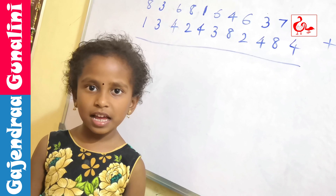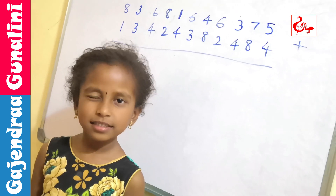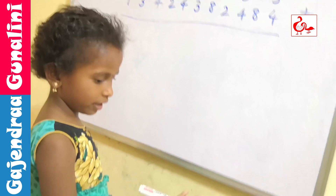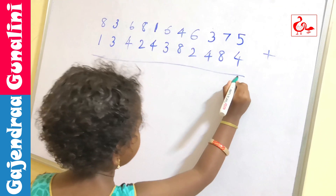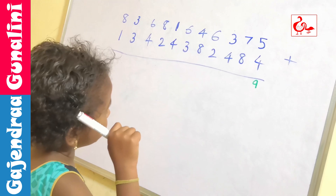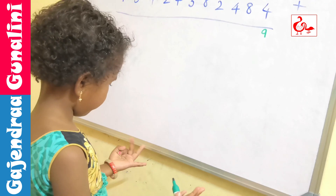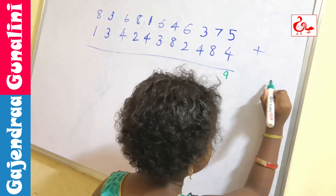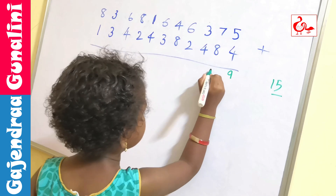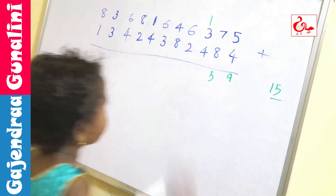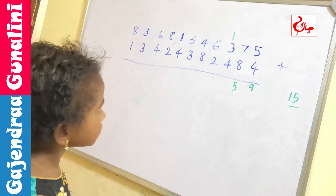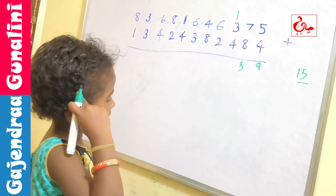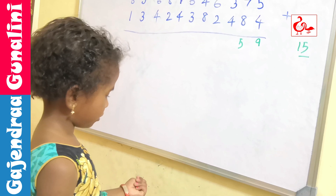My father gave a challenge to add this. Shall we add this? 5 plus 4: 5 in the mind, 4 in the finger. 5 after: 6, 7, 8, 9. We should write 9. 8 in the mind, 7 in the finger. 8 after: 9, 10, 11, 12, 13, 14, 15. So this number is right here. This 3 number also we should add. 3 in the mind, 1 in the finger. 3 after: 4. 4 in the mind, 4 in the finger. 4 after: 5, 6, 7, 8. We should write 8.